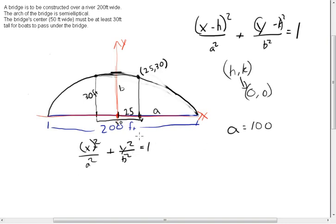Well, we know that a is 100. So, and x is 25. We're going to plug it in at this point. So, 25 squared over 100 squared plus y squared, y will be 30, over b squared is equal to 1.